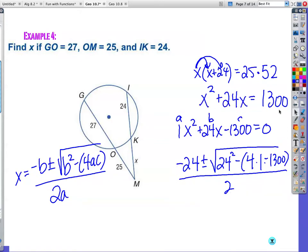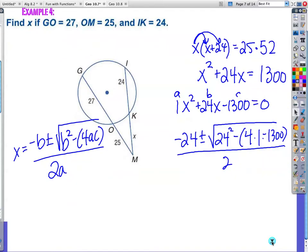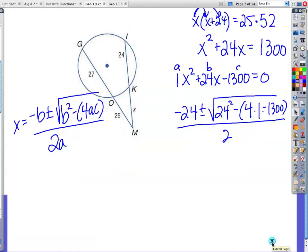You cannot use the quadratic formula unless you have it set equal to 0. So I have to subtract the 1300. Boy, that's going to be a big number, isn't it? x equals negative b plus or minus the square root of b squared minus 4ac all over 2a. a is your coefficient of x squared, b is your coefficient of x, and c is your constant term. So I actually have 1 for the a. So b is 24. The opposite of that is going to be negative 24 plus or minus the square root of 24 squared minus 4 times a times c divided by 2 times a.